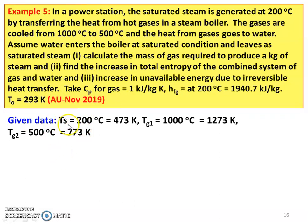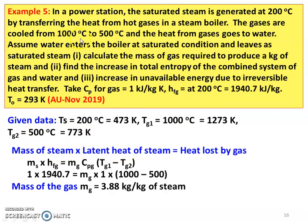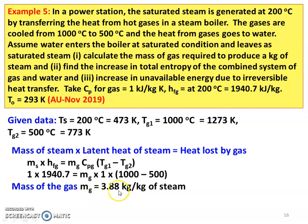Saturation temperature of the steam is 200 degree Celsius, which is 473 kelvin. Gas inlet temperature is 1000 degree Celsius, 1273 kelvin. Gas outlet temperature is 500 degree Celsius, 773 kelvin. Heat lost by the gas equals heat gained by the water. So mass of steam into latent heat of steam equals heat lost by the gas: MS into HFG equal to MG into CPG into (TG1 minus TG2). For 1 kg of steam, MS equal to 1, HFG equal to 1040.7, CPG equal to 1, temperature difference equal to 500. Solving, mass of gas required MG equal to 3.88 kg per kg of steam.